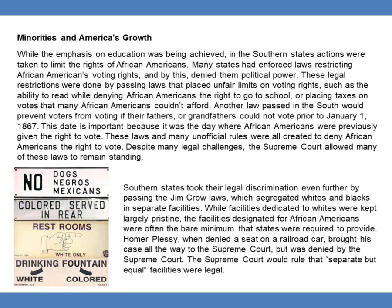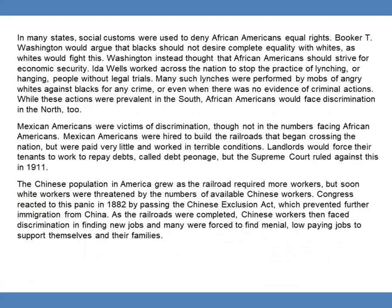Southern states took their legal discrimination further by passing the Jim Crow laws, which segregated whites and blacks into separate facilities. Facilities for whites were kept largely pristine, while those for African-Americans were often the bare minimum states were required to provide. Homer Plessy, when denied a seat on a railroad car, brought his case to the Supreme Court, which ruled that separate but equal facilities were legal. Booker T. Washington argued that blacks should not desire complete equality with whites, and instead thought African-Americans should strive for economic security. Ida Wells worked across the nation to stop the practice of lynching — hanging people without legal trials — which was often carried out by mobs against blacks, sometimes with no evidence of criminal actions.